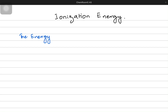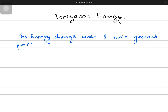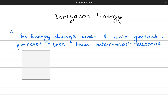The energy change — which is largely energy absorbed in this case — when one mole of gaseous particles (we are not talking about solids, we are not talking about liquids, we're talking about gaseous particles) lose their outermost electron. When one mole of gaseous particles lose their outermost electrons, the energy absorbed in the process is known as ionization energy.